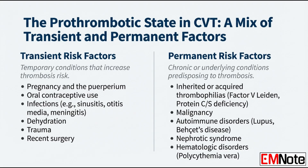Once we stabilize the acute event, we shift gears to the underlying predisposition. For permanent factors, you look for inherited or acquired thrombophilias — congenital or chronic conditions like Factor V Leiden, or deficiencies in protein C or protein S. Beyond those, systemic diseases like malignancy, hematologic disorders, and severe autoimmune conditions like lupus are high-risk permanent factors. That screening is essential for prognosis.